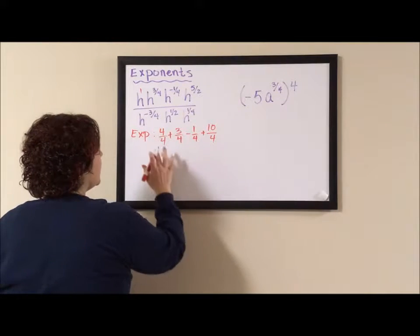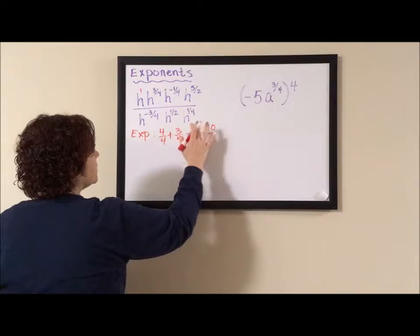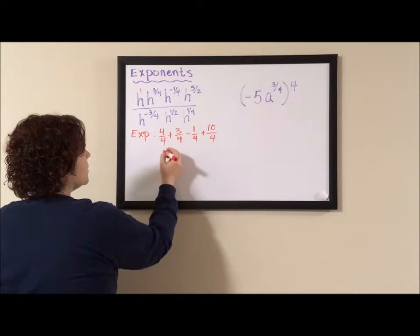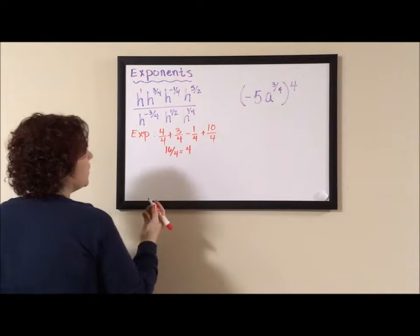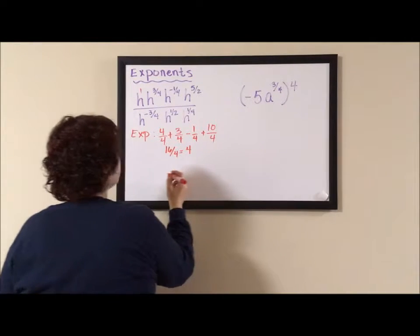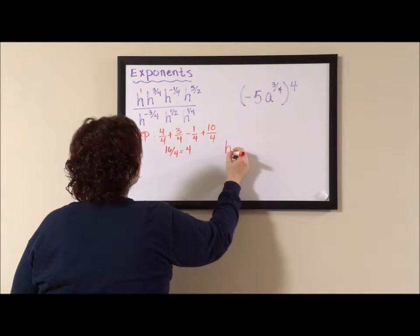And then I'm going to start adding: four, seven, six, sixteen fourths. Sixteen over four equals four. So my numerator becomes H to the fourth.